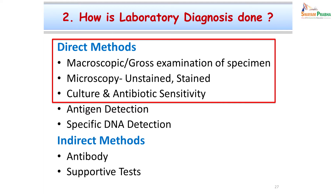How do we go for laboratory diagnosis? We have plenty of methods, called direct and indirect methods. In the direct method, we look for evidence directly — the presence of bacteria or their antigens in tissues or in the specimen received from representative sites. Direct methods include macroscopy (gross examination of specimen), microscopy, culture (growing and identifying them), and carrying out antibiotic sensitivity testing. In this class, we will restrict our discussion to macroscopy, microscopy, culture, and antibiotic sensitivity. Further tests will be covered in subsequent classes.